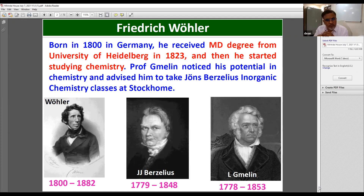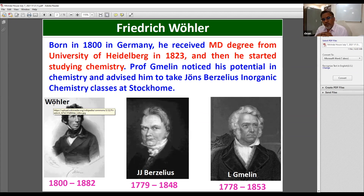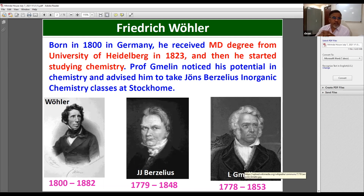When we talk about organic chemistry, it starts from the discovery of urea, which was synthesized by a chemist called Wöhler in 1823. Wöhler was not actually a chemist — he was a medical student. He used to take a substitute class of chemistry with Professor Gmelin, who realized the potential of Wöhler as a chemist and encouraged him to join the classes of Jöns Berzelius, the famous inorganic chemist at that time, who gave the concept of vitalism.